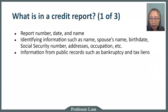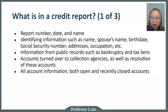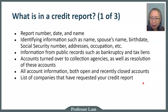Credit reports also include information from public records such as bankruptcy, property tax, and other recorded liabilities. If there are problems with past payments — such as accounts turned over to collection agencies — those will be included as well. All accounts are recorded, including bank accounts, credit cards, store loans, and store cards, both open and recently closed accounts. The report also includes a list of companies that have requested your credit report, such as when you apply for an apartment.